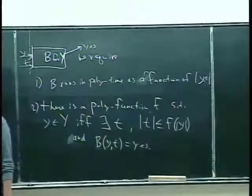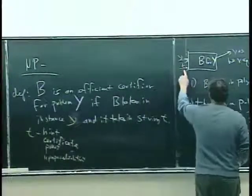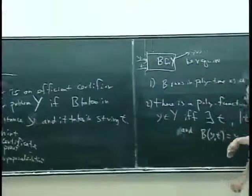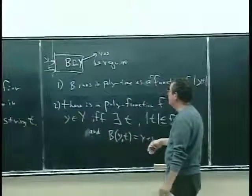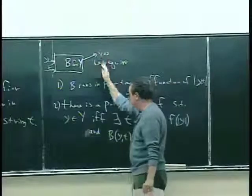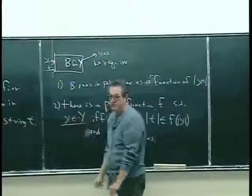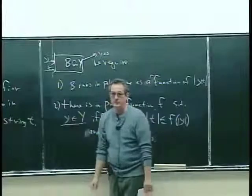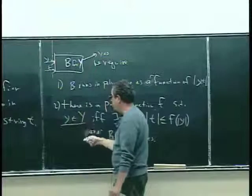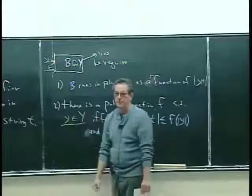You can feed it instances and you can feed it these additional hints which have this property, and then it will say yes, but only if little y is contained in capital Y. It should never say yes if in fact little y is not in capital Y.